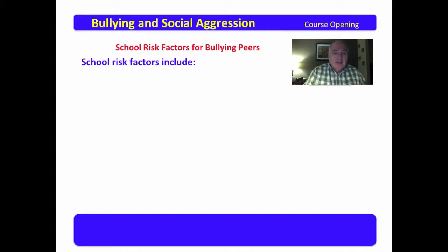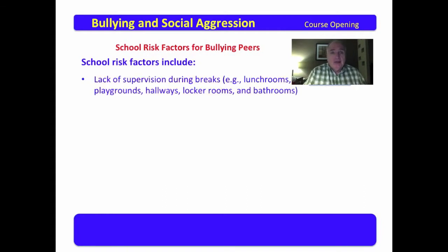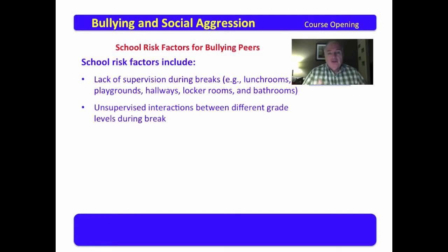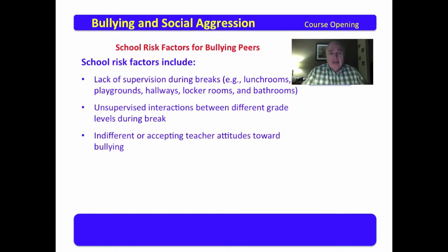School risk factors for bullying peers include the following — and these can apply to church, mosque, or any organization. Lack of supervision during breaks gives bullies more opportunity, such as in lunch rooms, playgrounds, hallways, locker rooms, and bathrooms. Unsupervised interactions between different grade levels during breaks also increases the chance of bullying. Indifferent or accepting teacher attitudes towards bullying are also a risk factor — if you're an adult and you witness bullying, you need to get involved. Don't turn a blind eye.